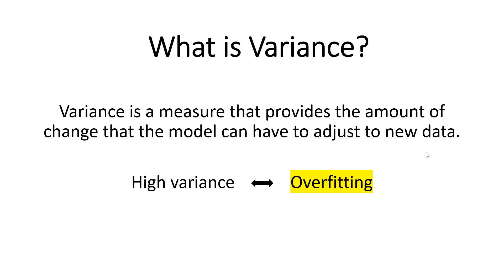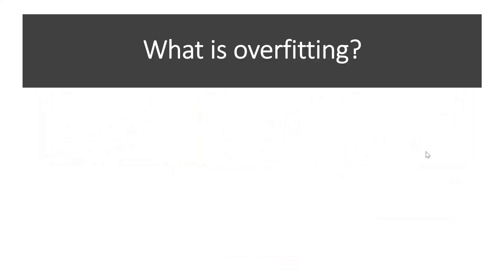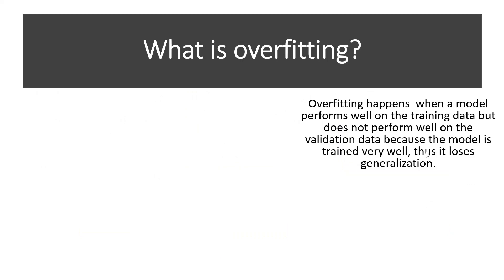The second thing is variance. Variance is defined as a measure that provides the amount of change that the model can have to adjust to new data. If we have a high variance, we are talking about overfitting. As you can see in this image, if we have high bias — meaning a high error between the estimated value and the actual value — we talk about underfitting. On the right, high variance means overfitting. In the middle, we have low bias and low variance, which results in a good fit of our model.